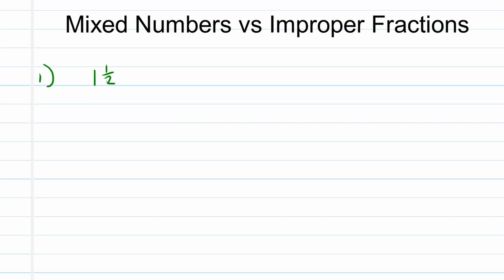In other words, this can be represented as two over two plus one over two, and it will have the same value as the mixed number one and a half. So two plus one is three, and the denominator stays the same as two. You will notice we have the mixed number on the left and, with the same value, the improper fraction three over two on the right.